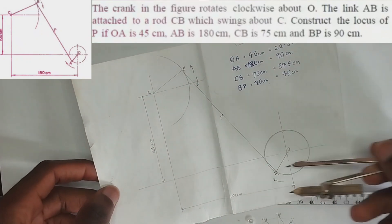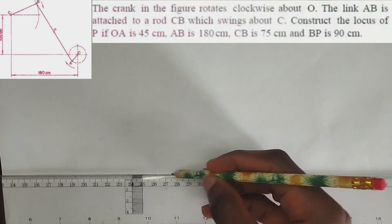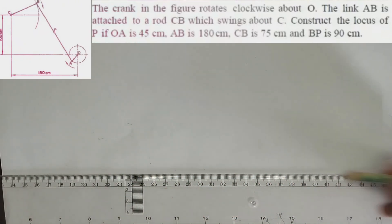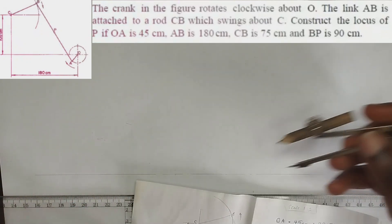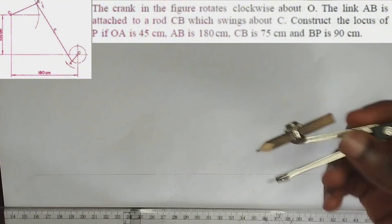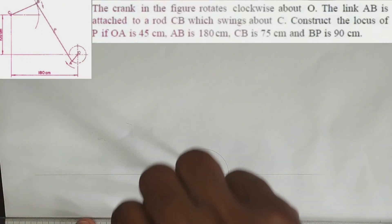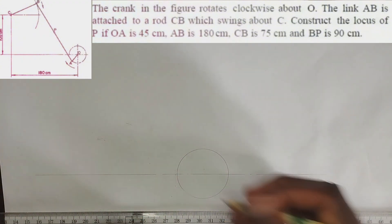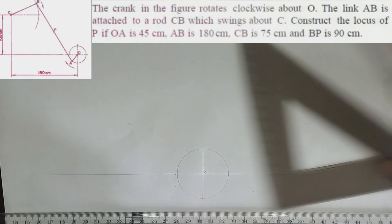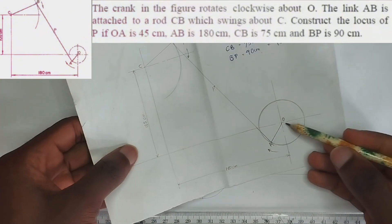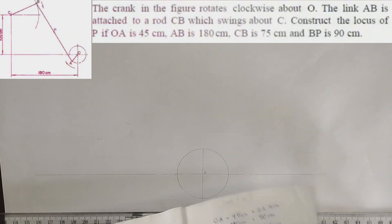We are going to start with the circle OA. I'm going to draw a straight line then a center line at the point of the circle. OA is given in the question as 45 centimeters, so I'm going to pick 22.5 as my radius. I'll place it on my drawing paper and draw the circle. The center is point O, and I'll draw a vertical center line. The line OA passes through the center.